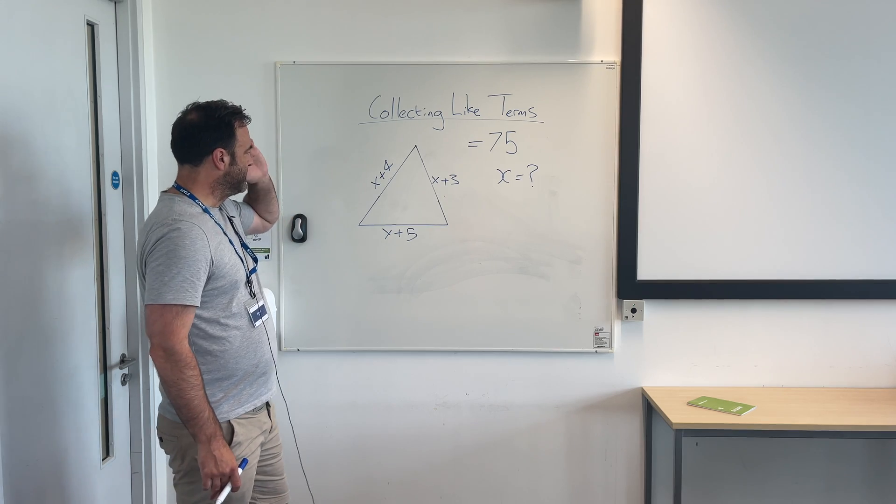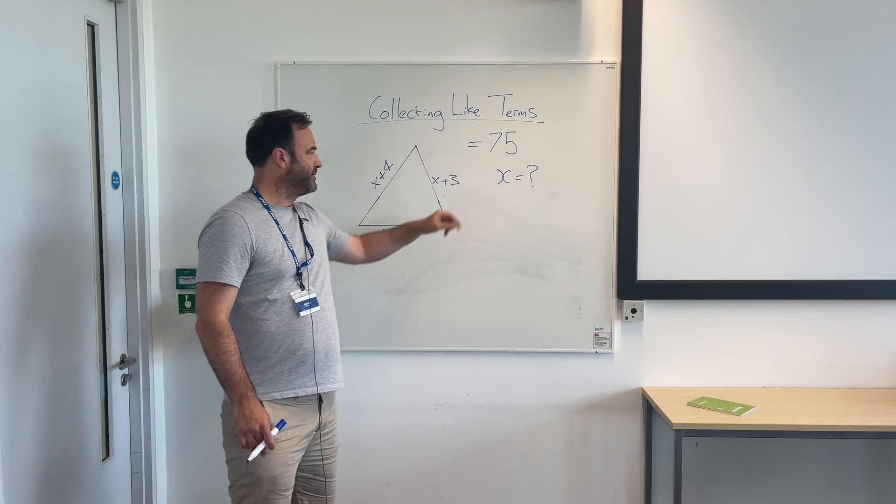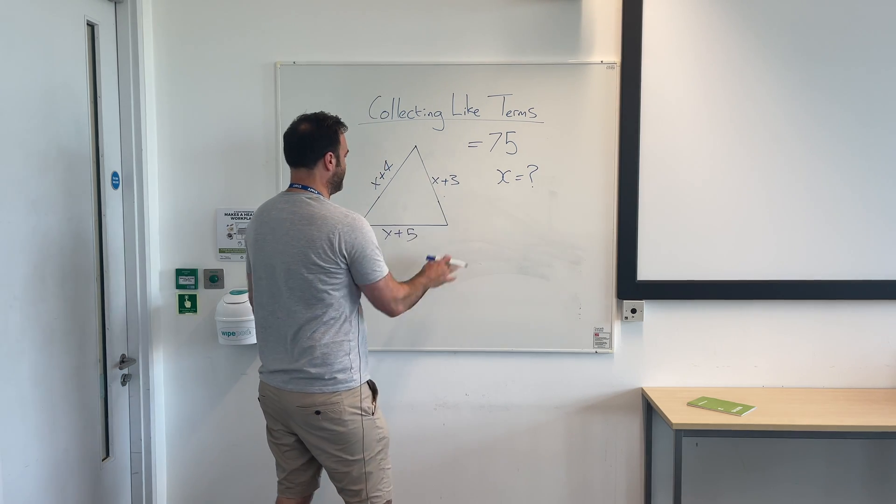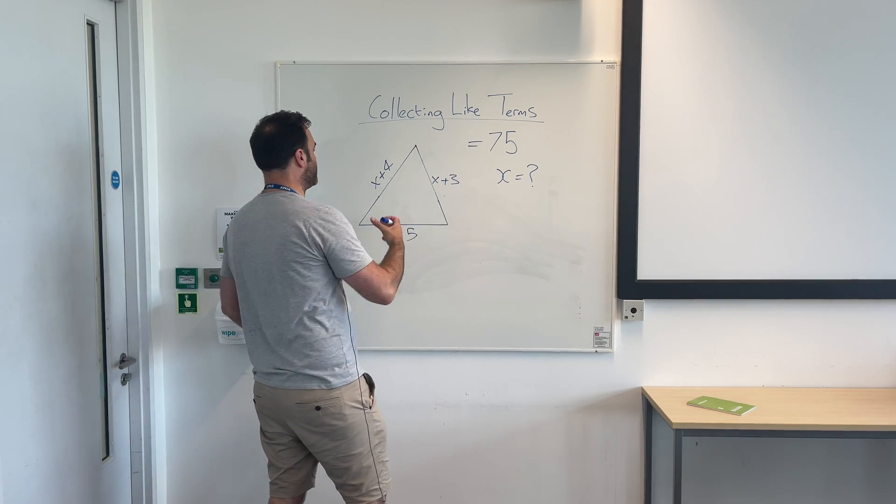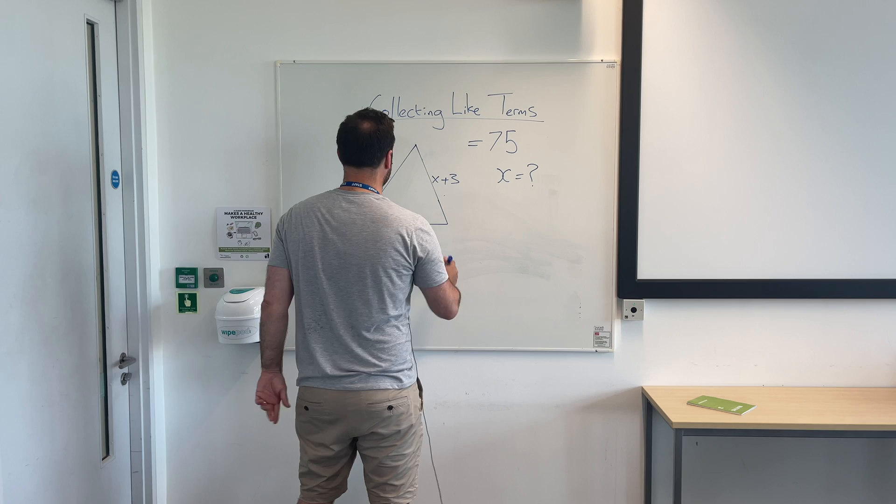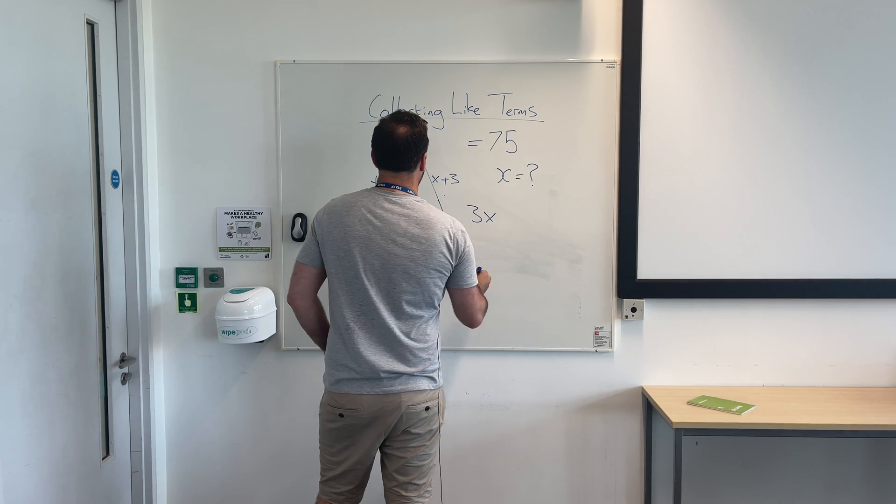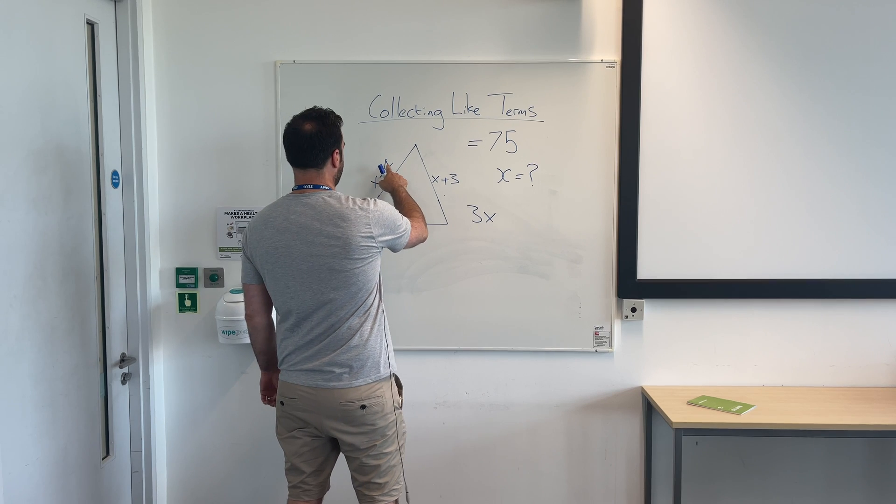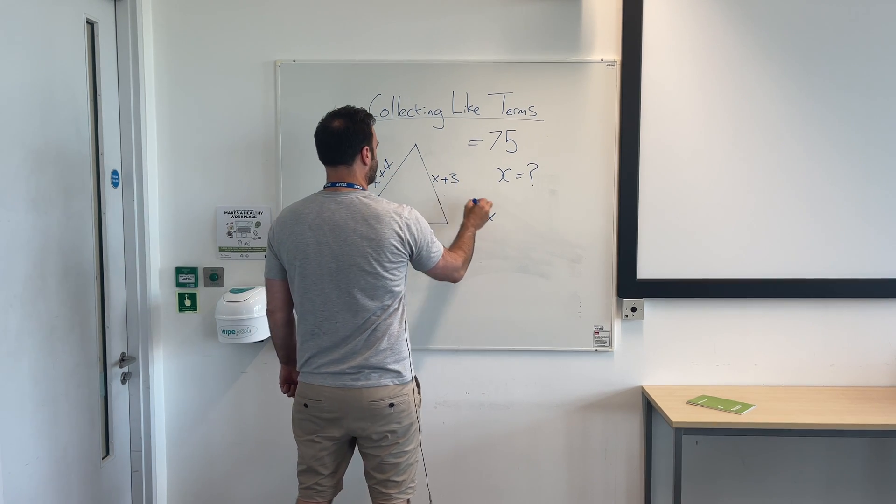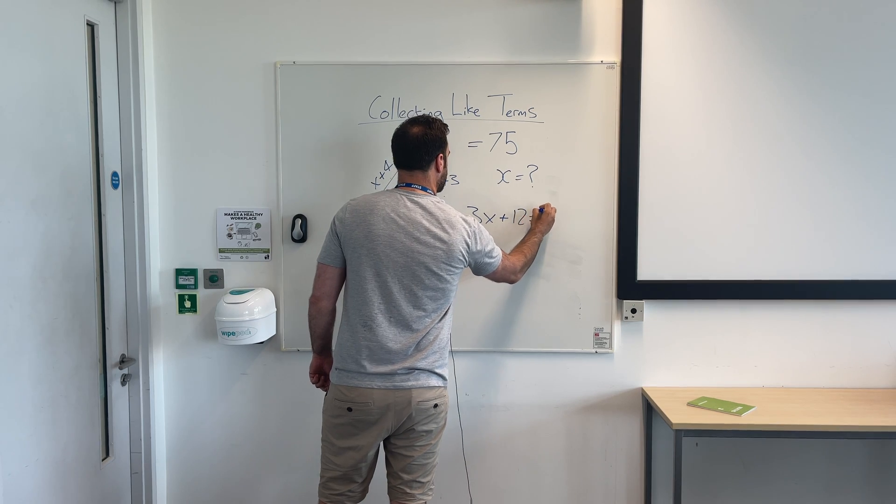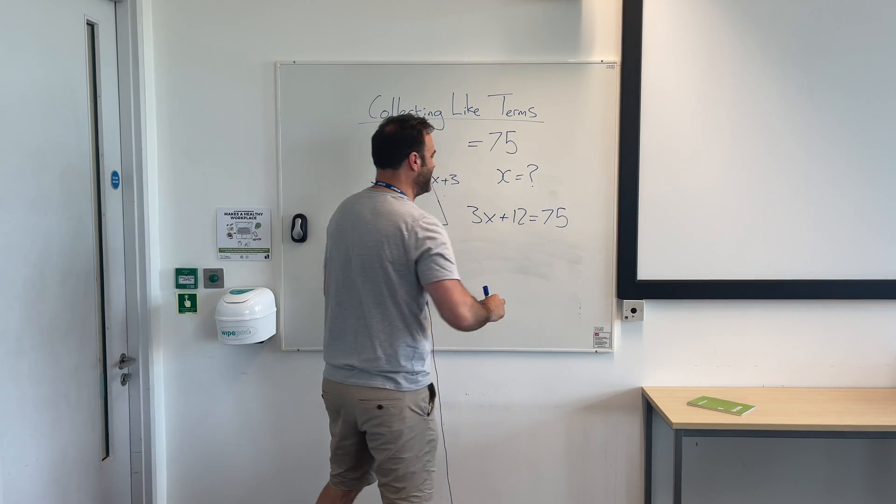So what we need to do to solve this, all of these add up to 75 and find x, is let's simplify this. Let's write this in a better way so we can understand it better. What do we do? We group things together. We've got three x's. And what are we adding here? 4, 5 and 3.